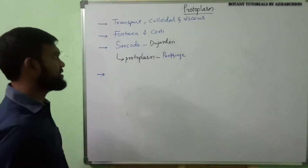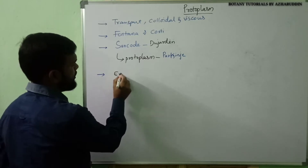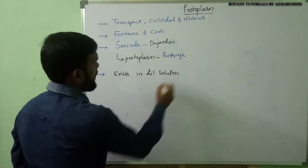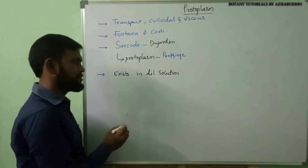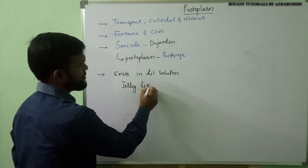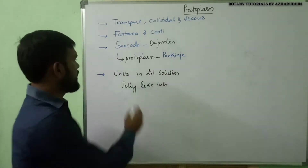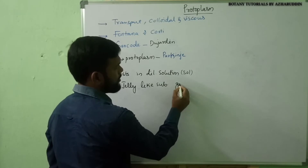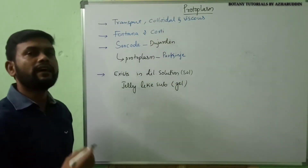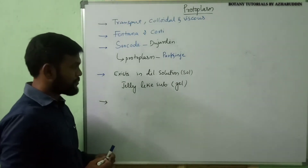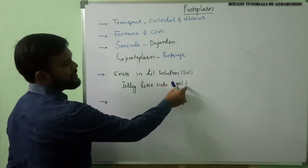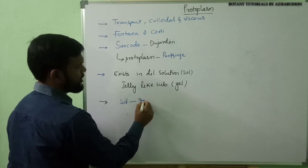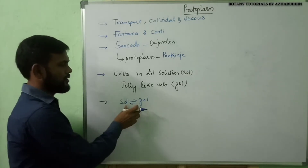This protoplasm exists in two different forms. It exists in a dilute solution form, which is called sol, and it also exists in a jelly-like substance form, which is called gel. Protoplasm is interconvertible — that means it can be converted from sol to gel and gel to sol.